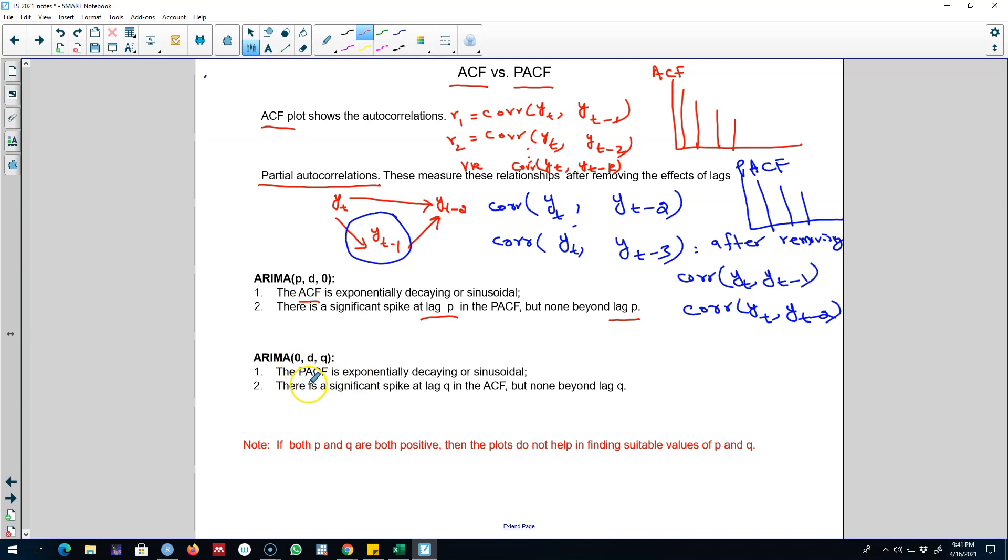the ARIMA model if the partial autocorrelation function is exponentially decaying or sinusoidal and there is a significant spike at lag q in the ACF but no significant spike beyond q. One thing to notice here is that we cannot